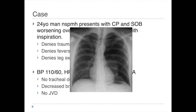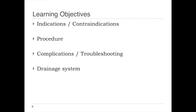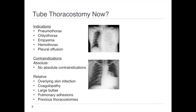Any of the juniors want to take a chance at what they see? There are some decreased lung markings on the left — probably a pneumothorax. So today we're going to talk about a couple of things: indications, contraindications, the procedure itself, complications, troubleshooting, and the drainage system involved with tube thoracostomies.